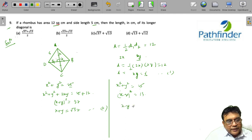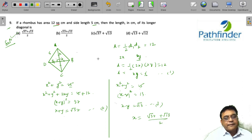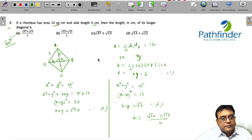So since you want the longer diagonal, you want basically x. When you solve equation 2 and equation 3, you will get x is equal to (√37 + √13) divided by 2, which is your answer.